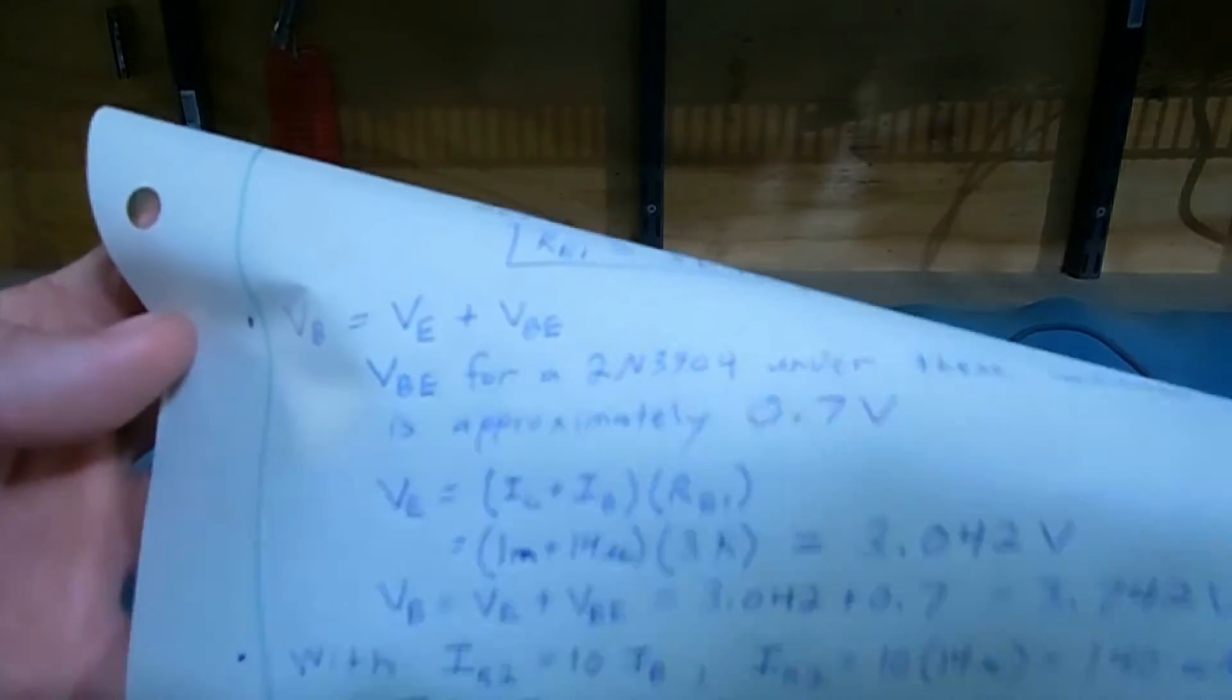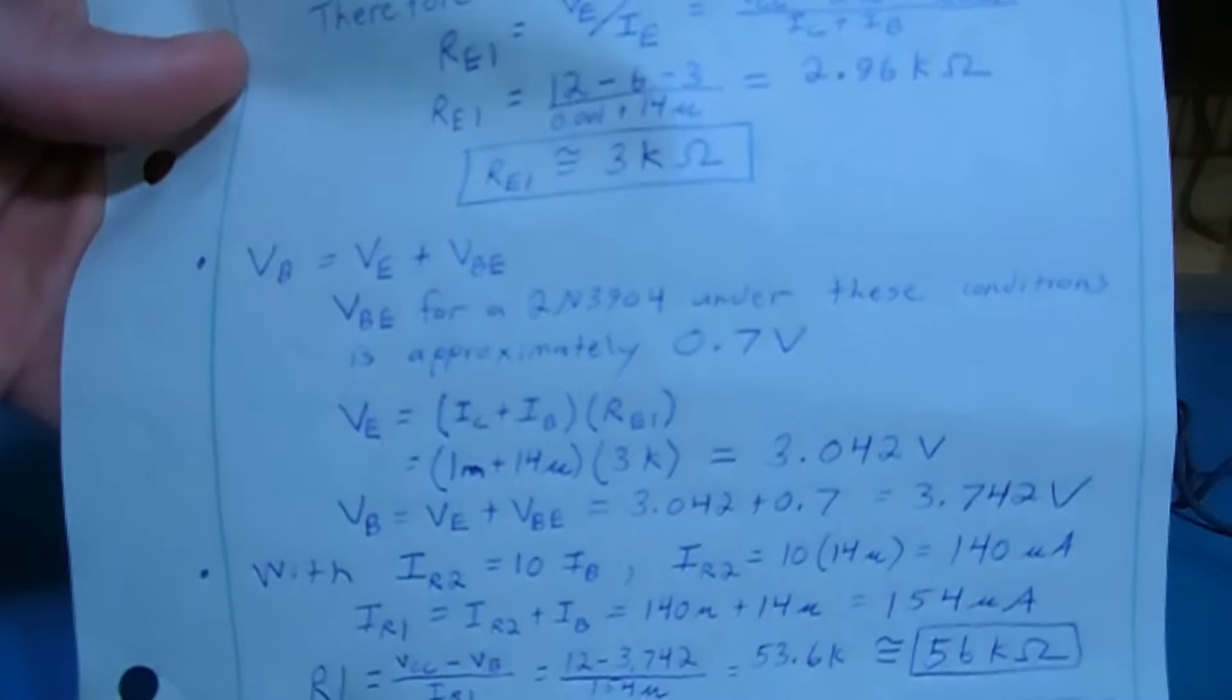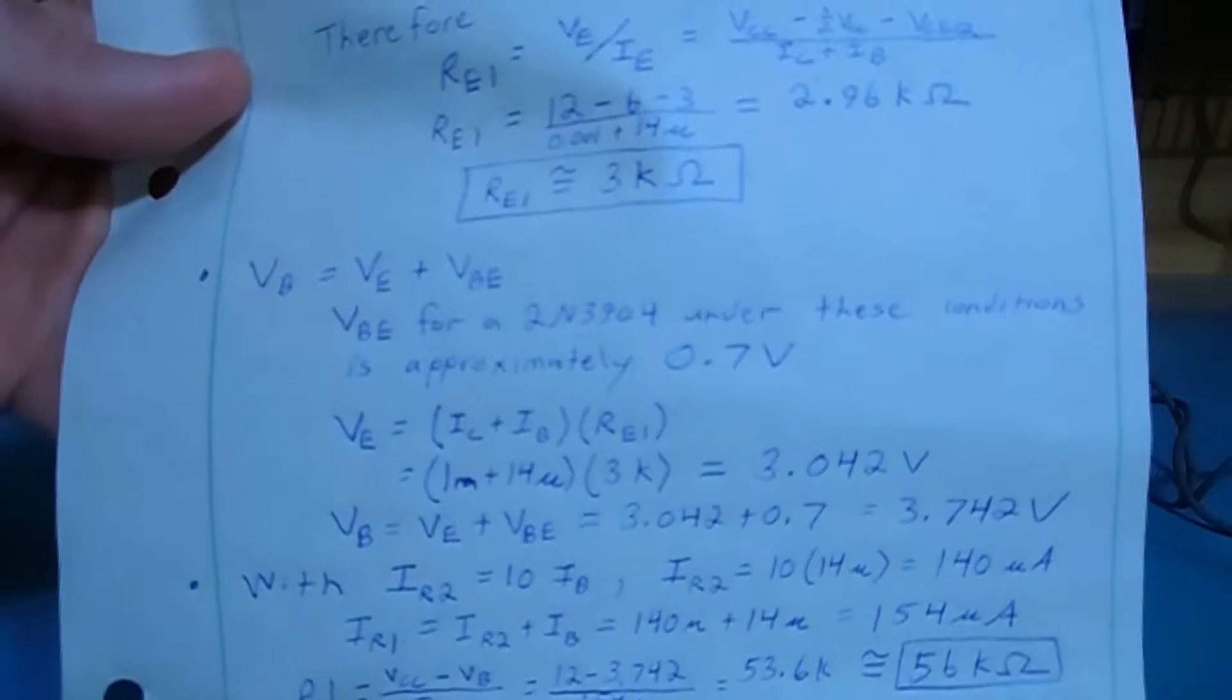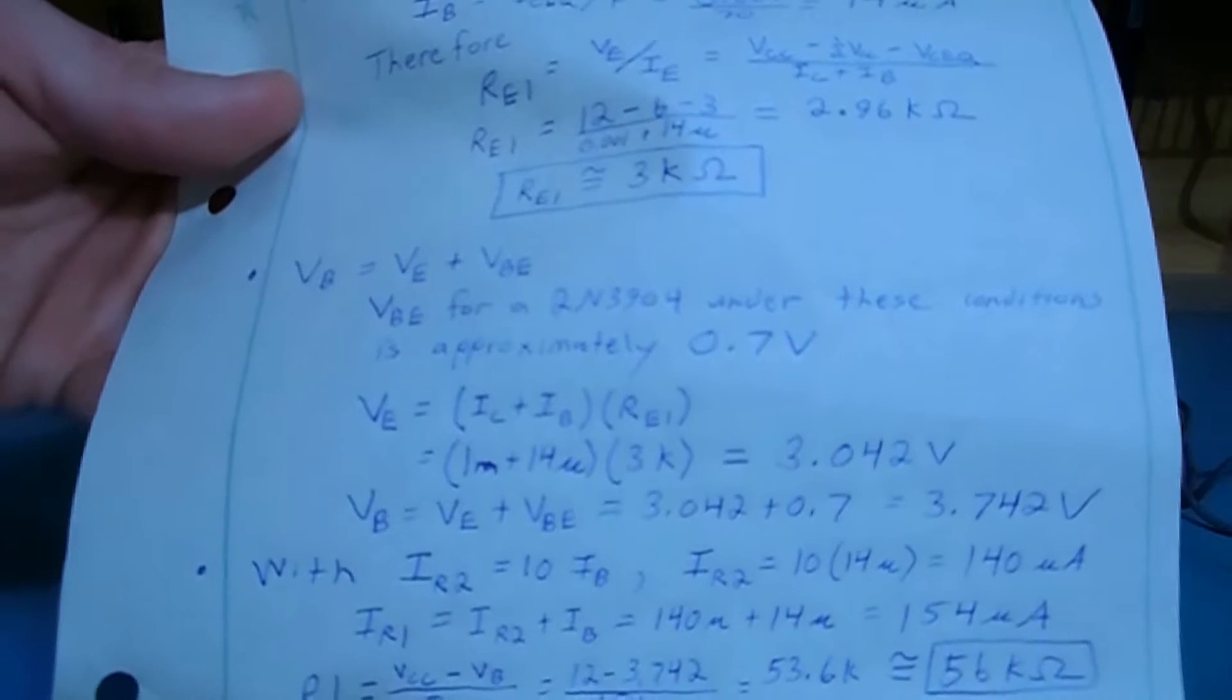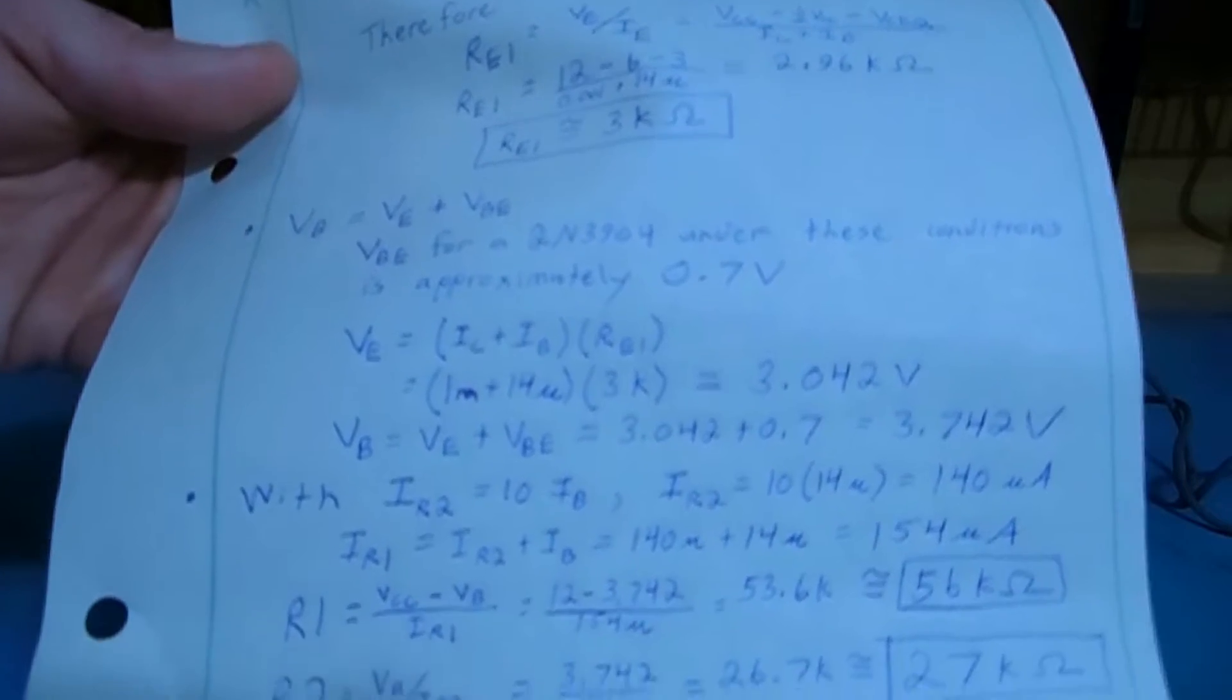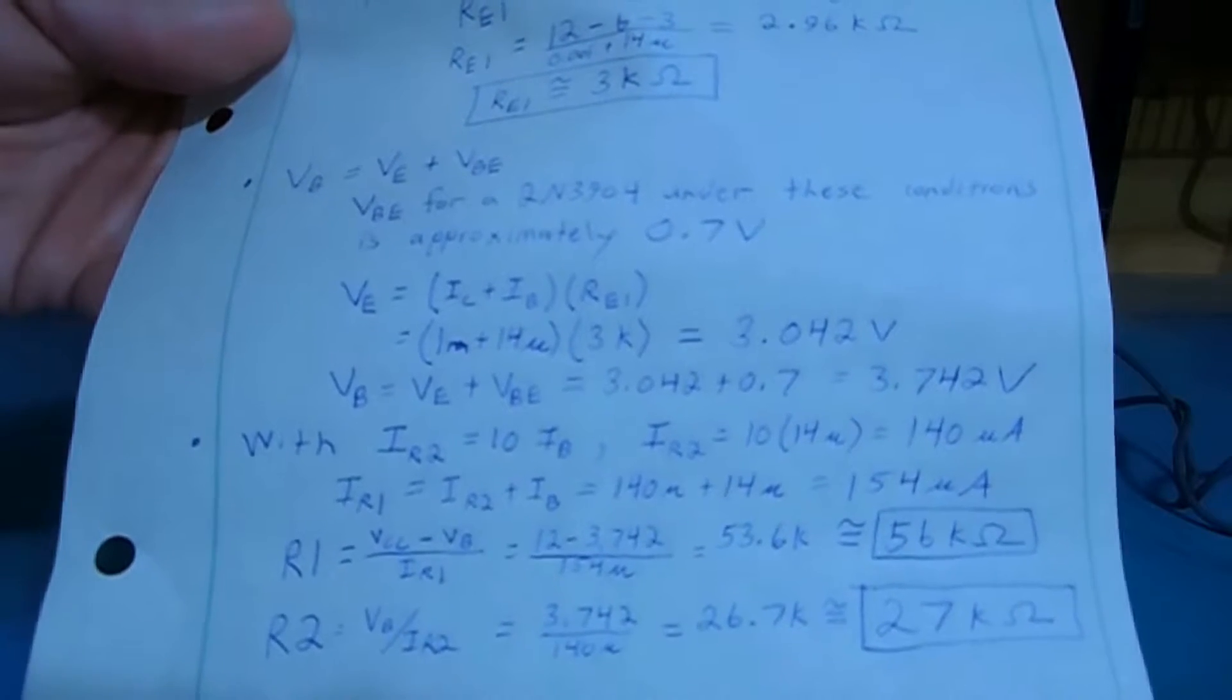Next we're going to use our value of 0.7 volts for the base to emitter voltage, which we got from the data sheet of the transistor, and we're going to calculate our bias resistors R1 and R2, by taking the emitter voltage of 3 volts, adding the 0.7 volts we expect at the base to emitter junction.